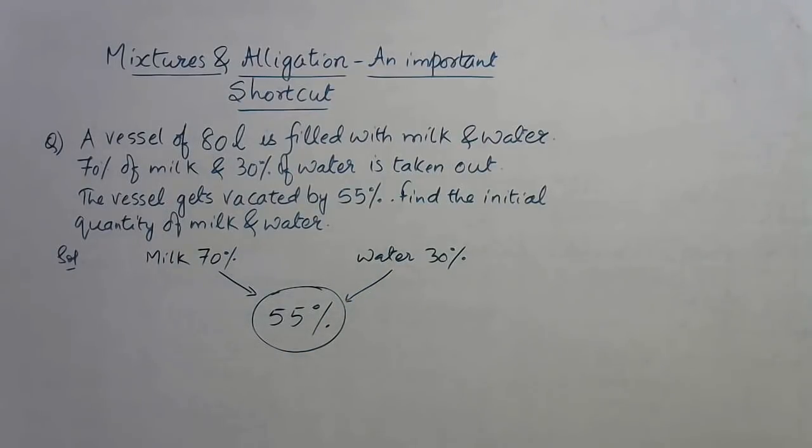Now the difference between these two, that is the more percentage one and this one, is 15, so we will write on this side 15%. The difference between the percentage being vacated and the water being taken out, 55 minus 30, is 25, so I'll write 25 on this side.